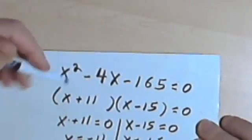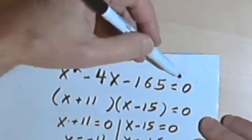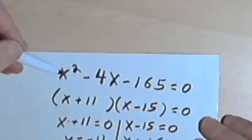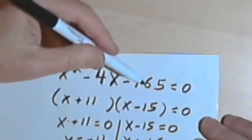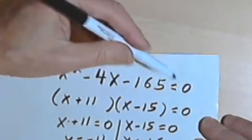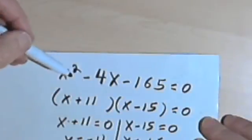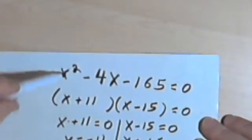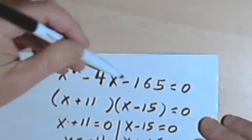Okay, I've rewritten the equation and set it equal to zero. So I've got x squared minus 4x minus 165 equals zero. And then I just factored that quadratic side of it, the x squared minus 4x minus 165.